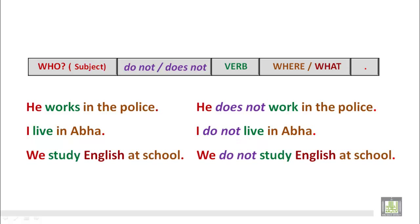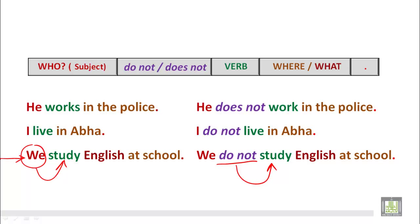'We study English at school.' The subject is first person we, and the base form of the verb in the present tense is study. So we make the negative using do not in front of the base form of the verb. 'We do not study English at school.' This is a negative sentence.